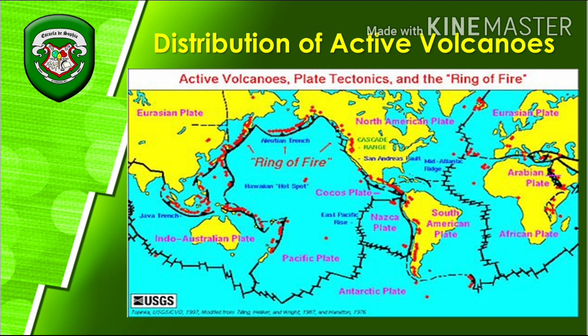So that is the distribution of active volcanoes — the Pacific Ring of Fire has many volcanoes around the Pacific Ocean because the Eurasian plate, Indo-Australian plate, Nazca plate, Antarctic plate, and North American plate all surround the Pacific plate. When they move independently, there is a chance they collide or separate, creating active volcanoes — as proven by the many volcanoes along the boundary of the Pacific plate with the surrounding tectonic plates.